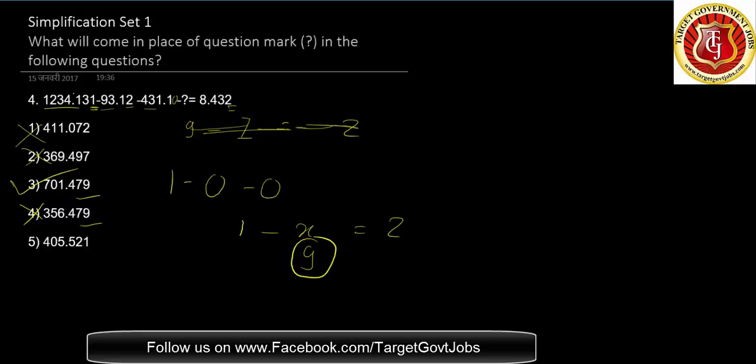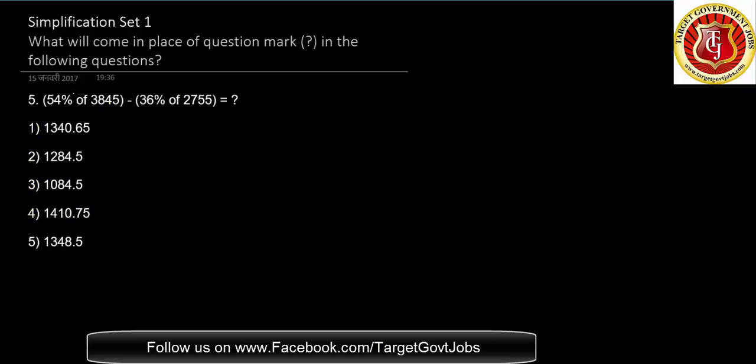Let's move to the last question. 54% - you can digitize this. 5 plus 4 is 9, which is 0. 0 into anything is 0. Minus 36 is again 0, so the root is 0. Which option gives me root 0?